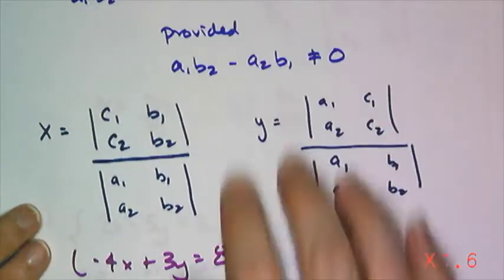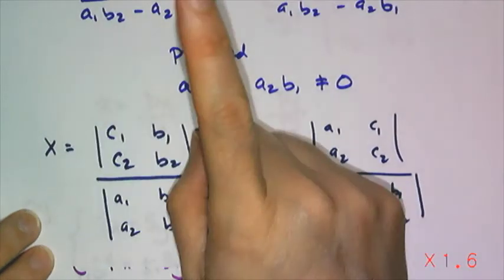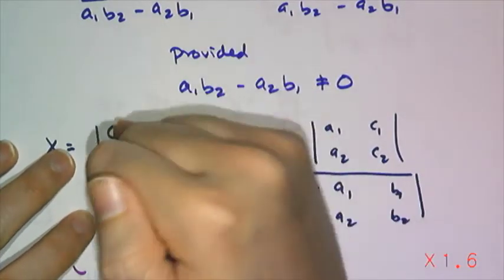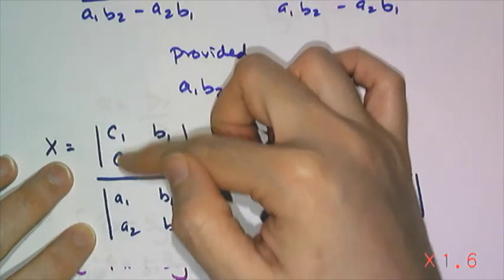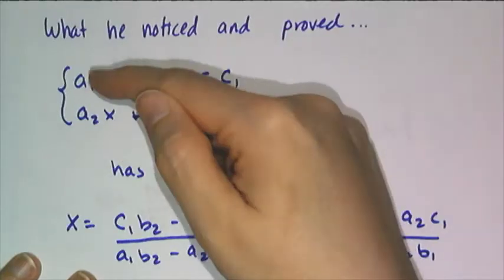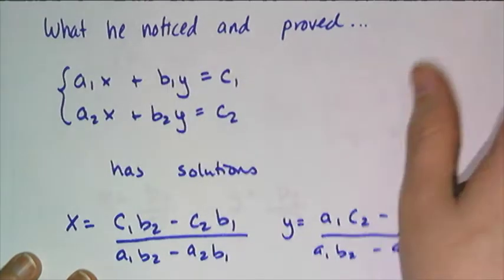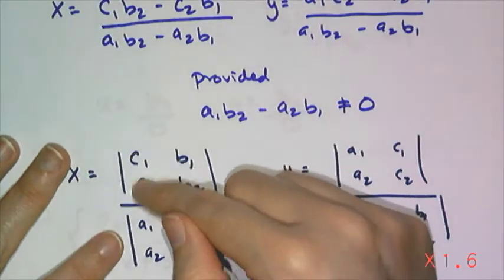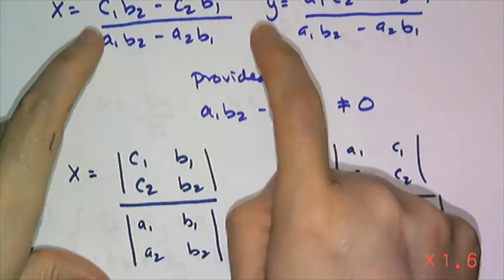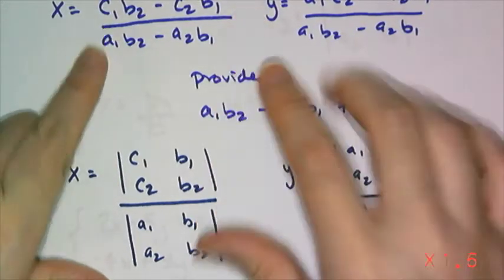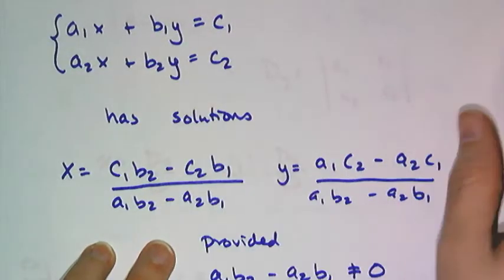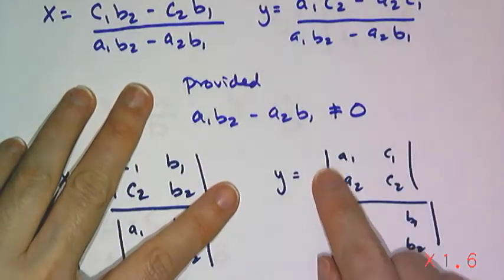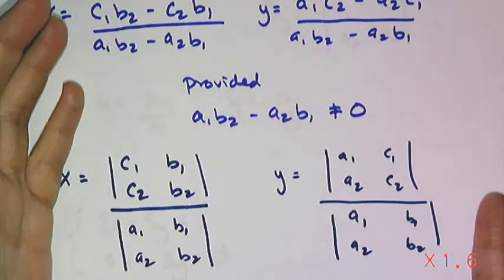Well, he noticed that if when you're solving for x, if you replace the coefficients of the x in the equation, so replace a1 and a2, the coefficients of x, with the constants and found the determinant of that, that is the numerator for x. And then if I replace the b column when solving for y, which were the coefficients of y, and you made a little determinant, that's the other way to solve x and y.